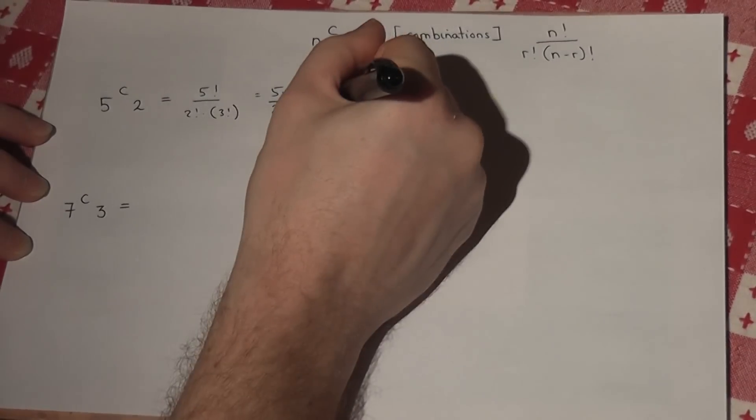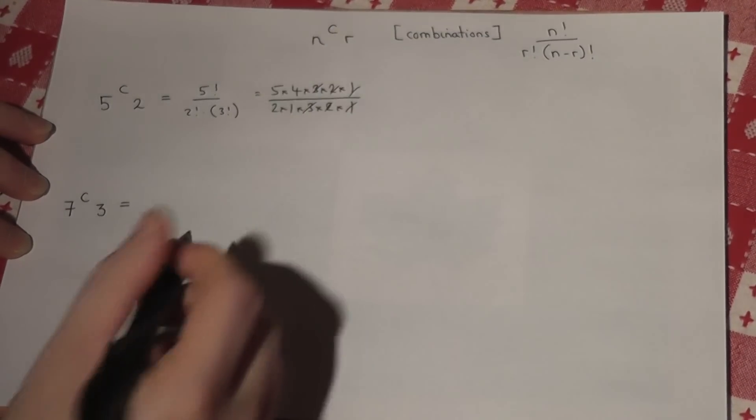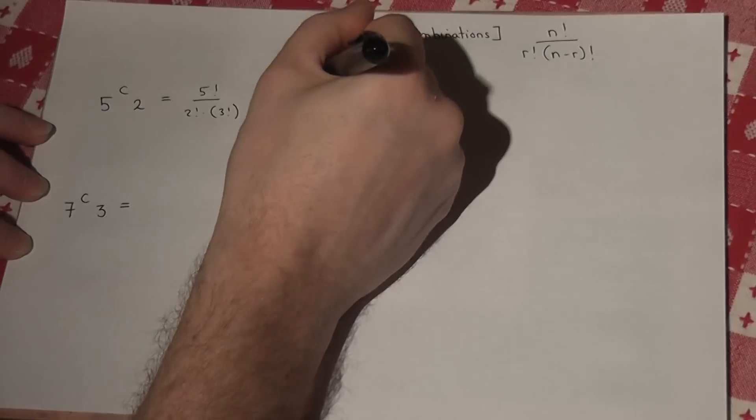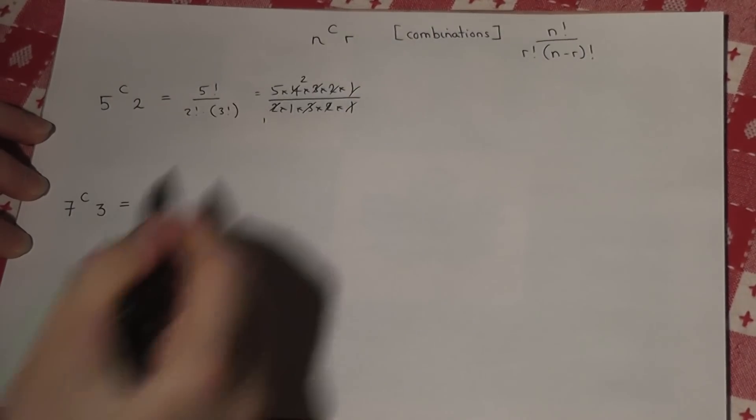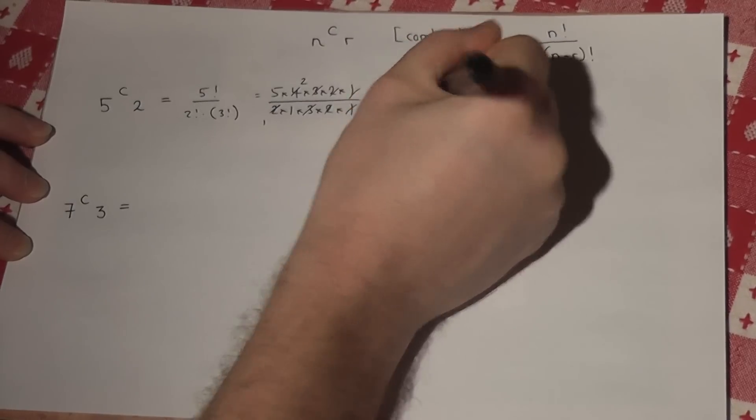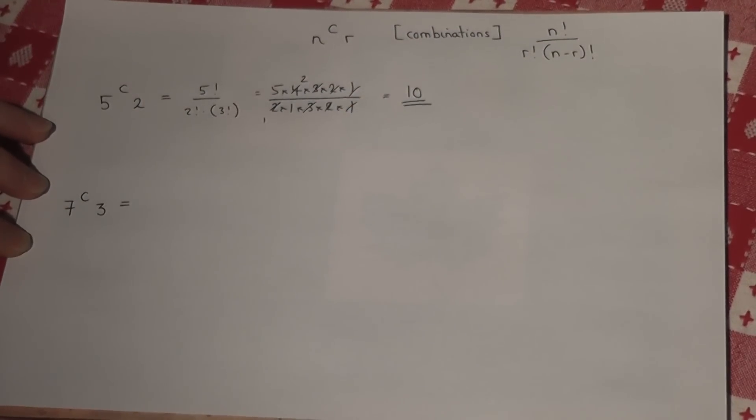Now they all cancel off. There's 1 two in 2, but there are 2 twos in 4, and 5 times 2 just equals 10. And we always get whole numbers with combinations.